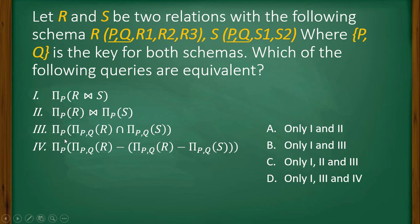Now if you look at the third one, projection P from projection PQ on R intersection projection PQ over S. So it is selecting all the PQ values of R, all the PQ values from S, and then it is doing the intersection and selecting the P values. So this result and this result are going to be the same, right, because doing a natural join.